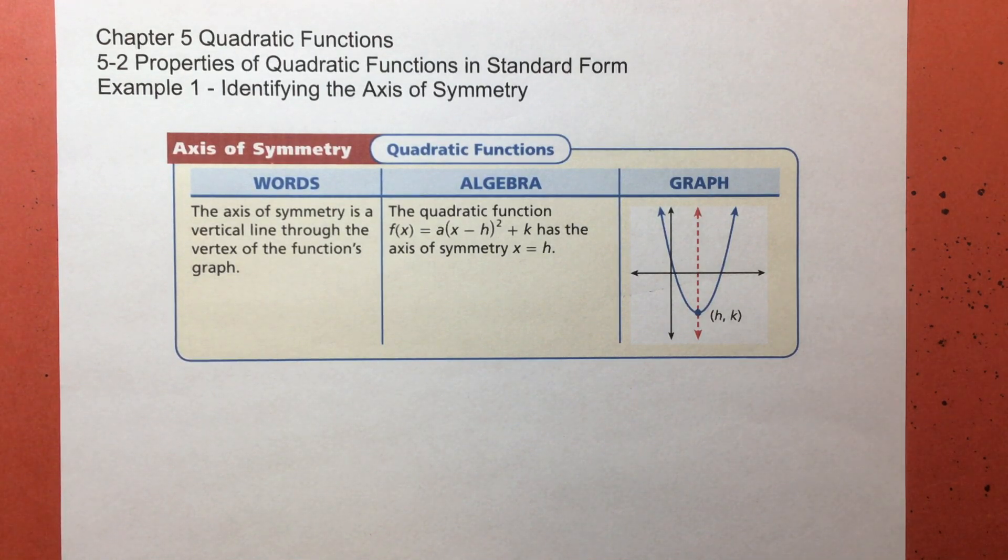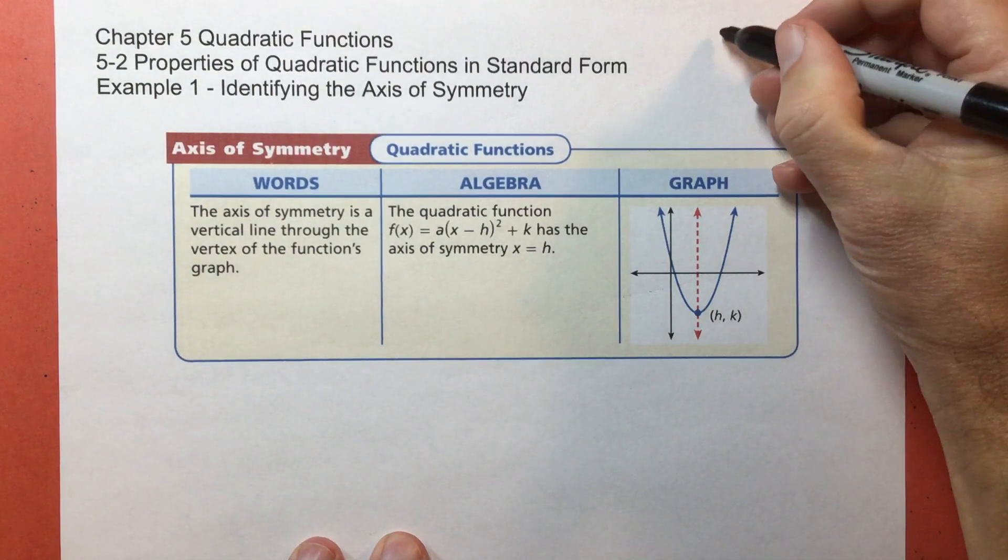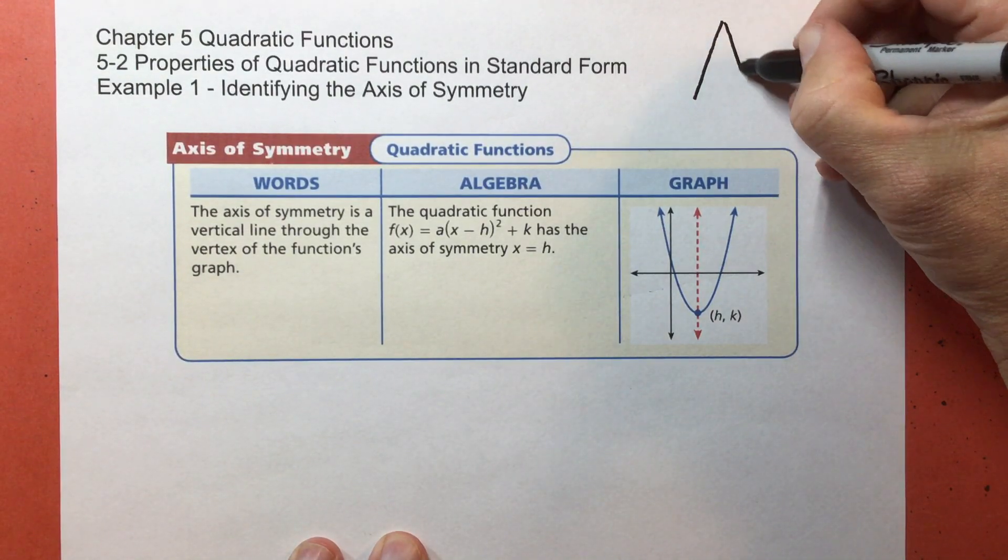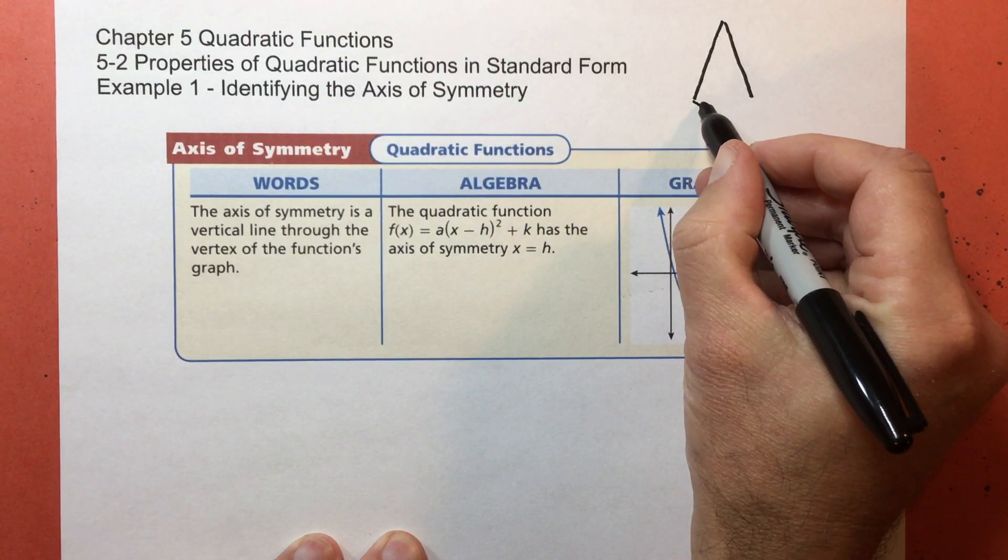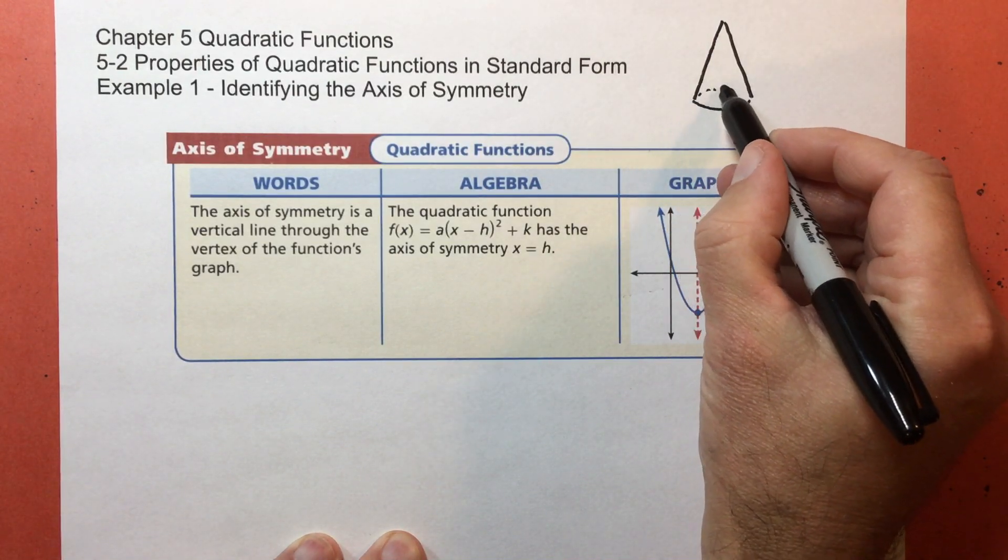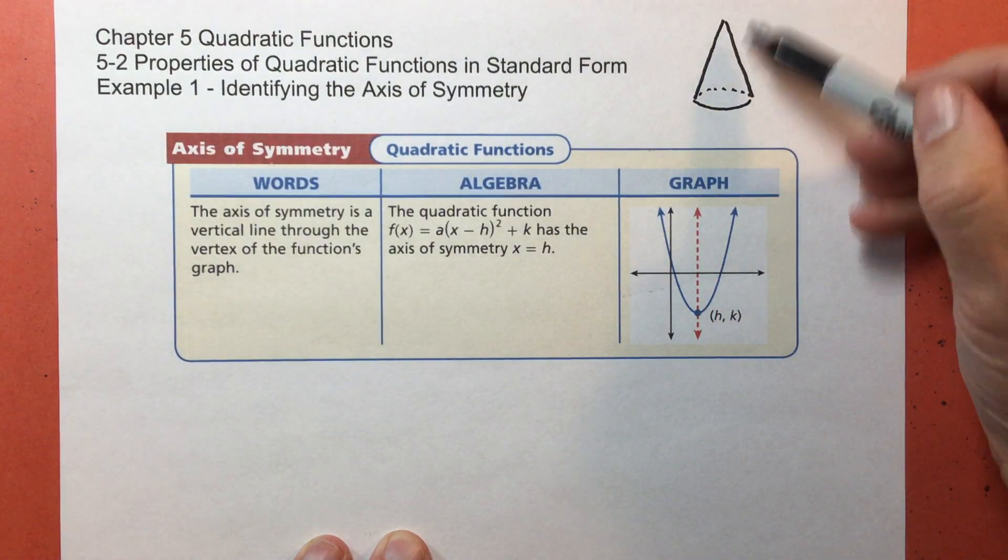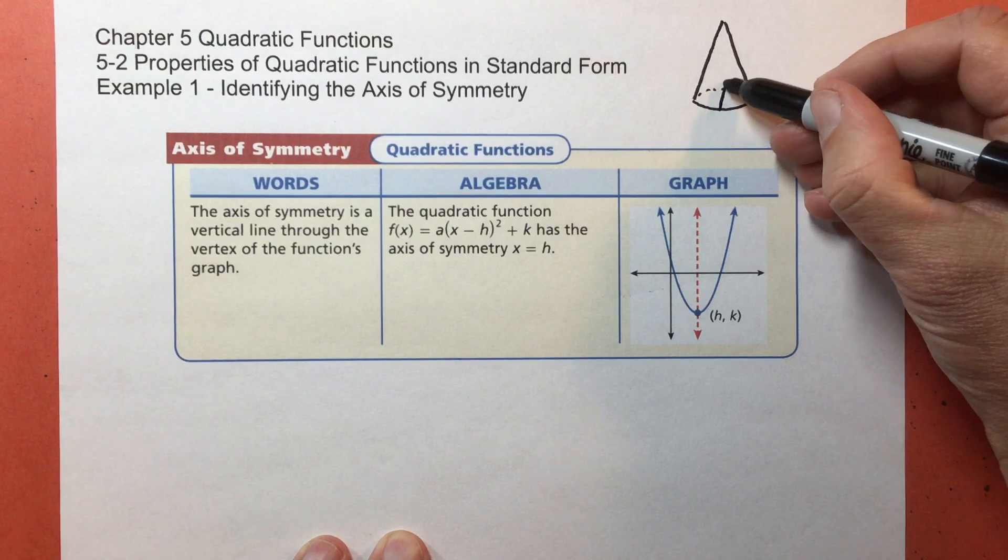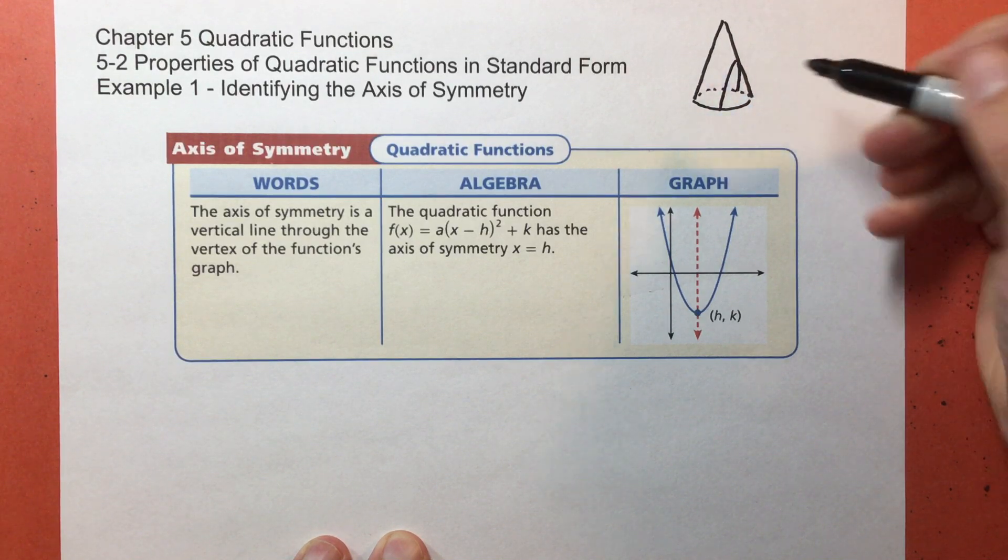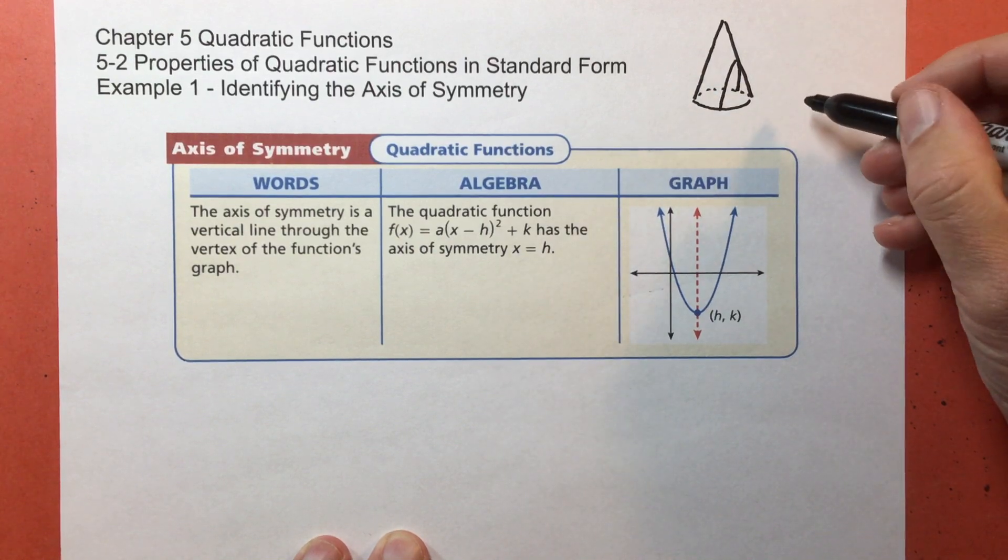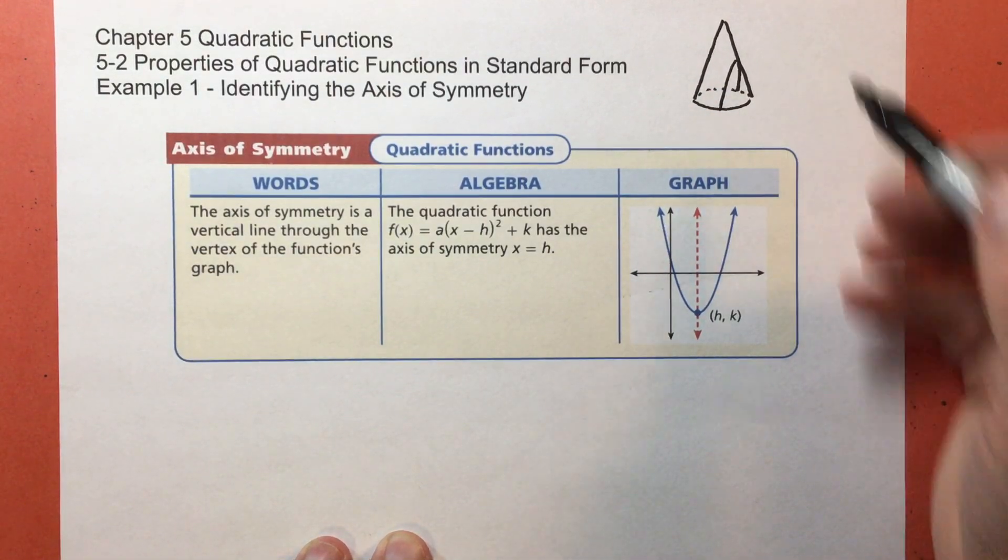Parabolas occur in a lot of different places. It actually comes from what we call a conic section, or it's part of a cone. I'll see if I can draw it. If I have a cone, which kind of looks like a pyramid except it has a round circular base, if I cut part of this off and I cut it like this, and then I open that up and look at it, that shape that I have here, that's the parabola.